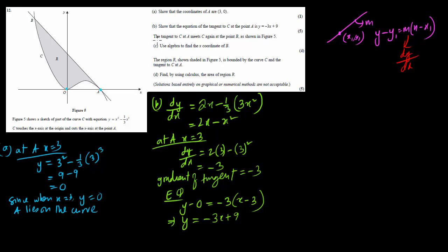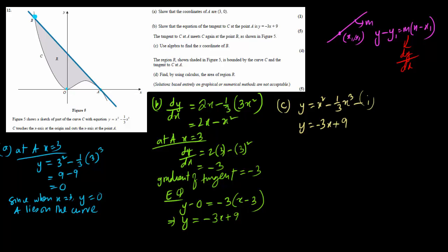The next question asks us to find where the tangent to the curve at A meets the curve again at point B. We can see from the picture that the tangent also meets the curve at another point B, and we have to find the x-coordinate of B. To do this, we solve the two simultaneous equations: equation 1 is y equals x squared minus one-third x cubed (the curve), and equation 2 is y equals minus 3x plus 9 (the tangent line). One intersection is point A; we need the other one, so we ignore any x value equal to 3. By substitution, x squared minus one-third x cubed equals minus 3x plus 9.